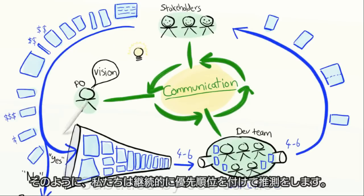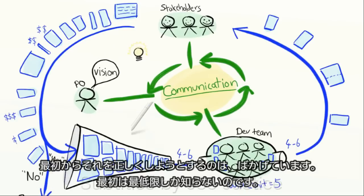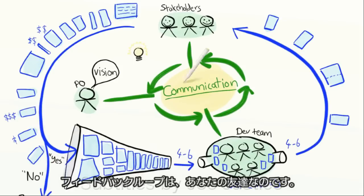That's why we continuously prioritize and estimate. Trying to get it all right from the beginning is pretty dumb because that's when we know the least. So the feedback loop is our friend.